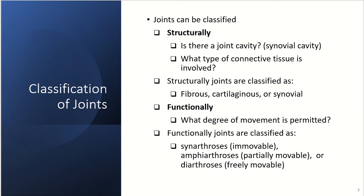Functionally, we look at the degree of movement that's permitted by the joint. Functionally, joints are classified as either a synarthrosis, which is immovable; amphiarthrosis, which are partially movable; and diarthrosis, which are freely movable.